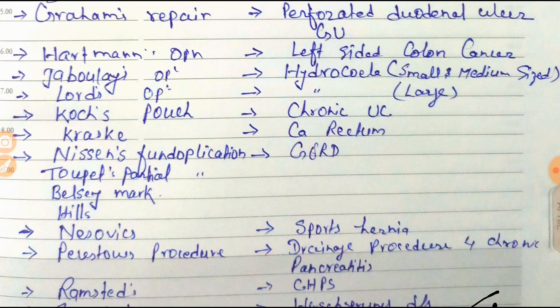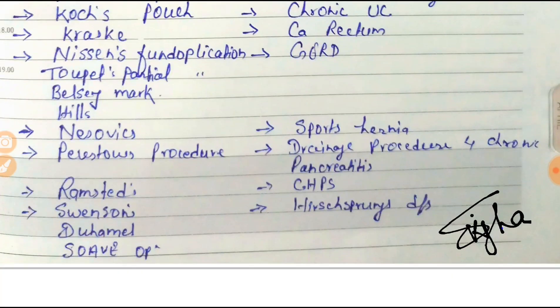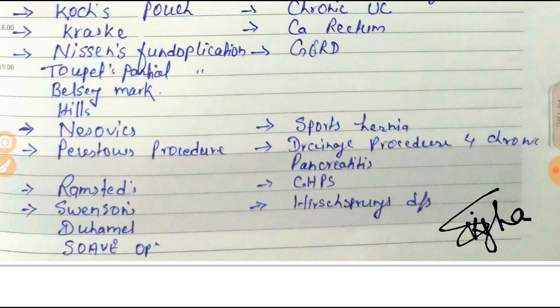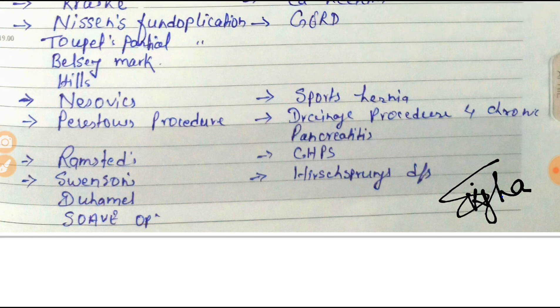For chronic ulcerative colitis, Coquet's operation is used. For carcinoma of the rectum, Kraske's operation is used. For GERD, the operations are: Nissen's fundoplication, Toupet's partial fundoplication, Belsey Mark IV operation, and Hill's operation — these four types are done in case of GERD. For sports hernia, Nessovic's operation is used. For drainage procedure in chronic pancreatitis, the Puestow procedure is used.